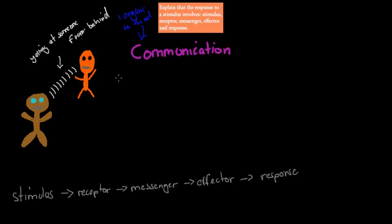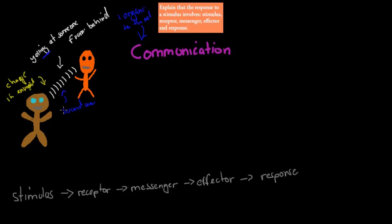The idea is communication between two individuals — one person yelling at someone else from behind. These are supposed to be the sound waves. This person needs to actually be able to detect those sound waves, so he needs receptors for them. The stimulus in this case is a change in the environment — the sound waves. Beforehand the sound waves weren't there, and as soon as they appear there's a change, and that's our stimulus.